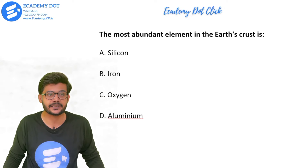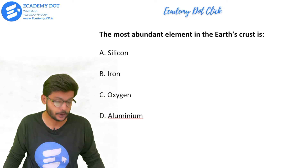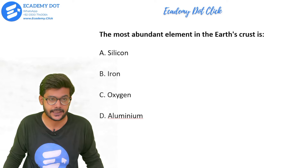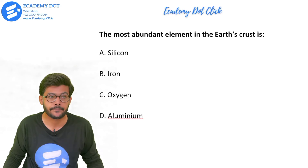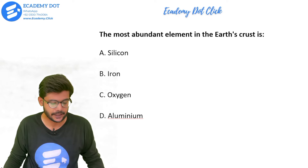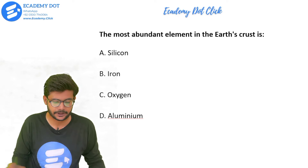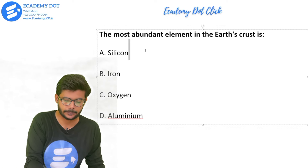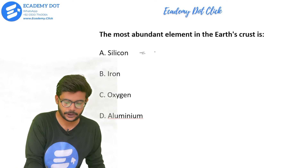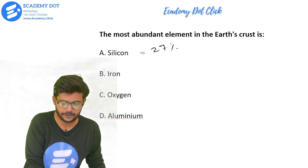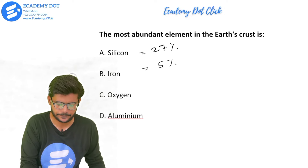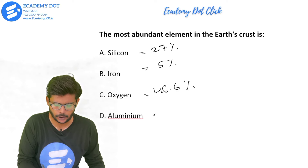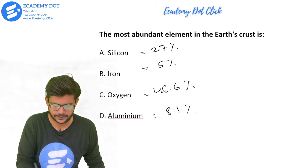The most abundant element in the earth's crust — this question has appeared before in screening exams. Options are silicon, iron, oxygen, or aluminum. Silicon is 27%, iron is 5%, oxygen is around 46.6%, and aluminum is 8.1%. So the most abundant element is oxygen.